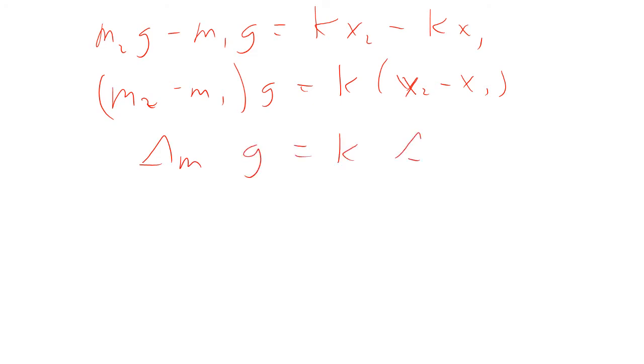Well, why don't we subtract the two? So M2g minus M1g, that's going to be Kx2 minus Kx1. So M2 minus M1 times G equals Kx2 minus x1. Well, that's going to be the delta M times G equals K delta x.